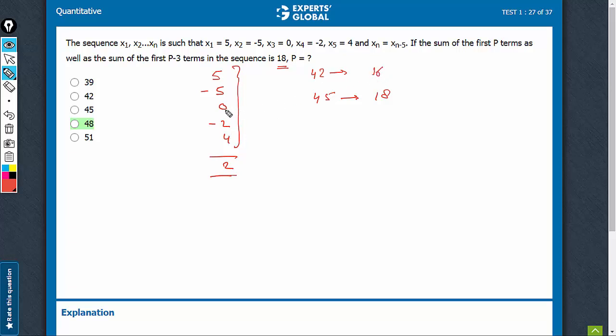Then 16 plus 0 plus minus 2 plus 4 must have made it 18. That means p cannot be 45, because if p were 45, the sum of 42 terms, which is p minus 3 terms, is not 18. So that cannot be the case.